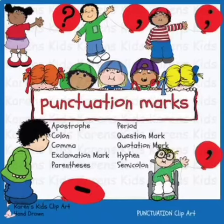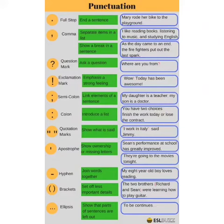Now let's have a look at the common punctuation marks. Full stop — it is used to end a sentence. Comma — it separates items in a list and shows a break in a sentence.